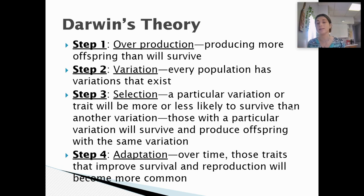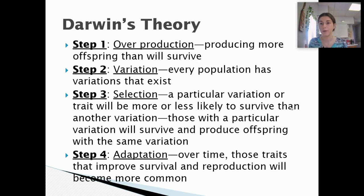The fourth step is adaptation. Over time, those traits that improve survival and reproduction will become more common. If a trait initially helps an organism survive and reproduce, because that trait was so favorable, it will be passed on to more and more offspring and become more common in the population.